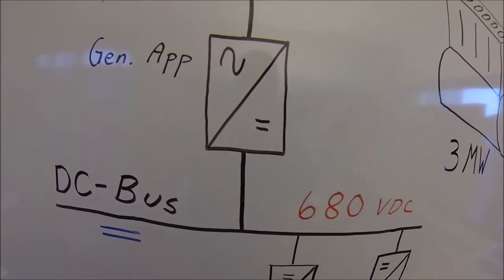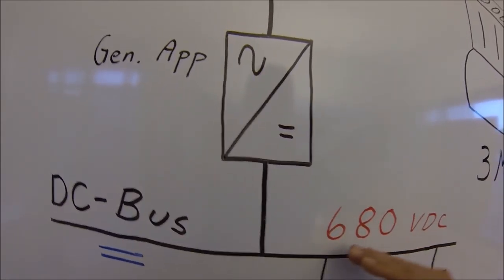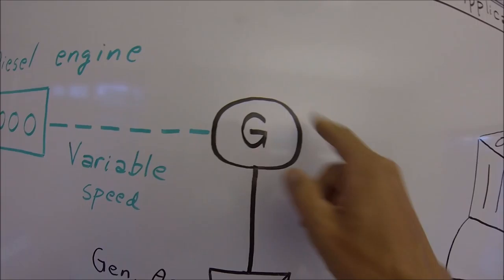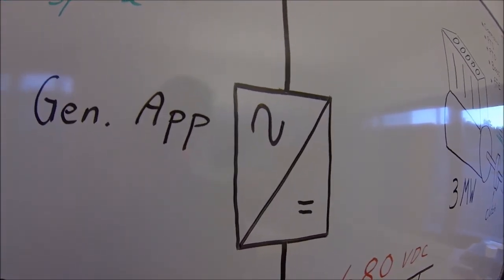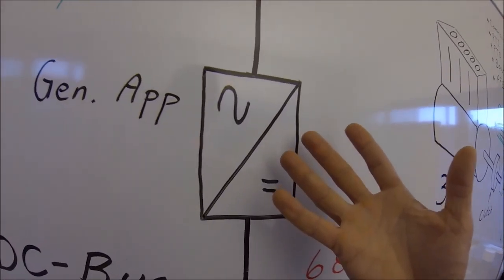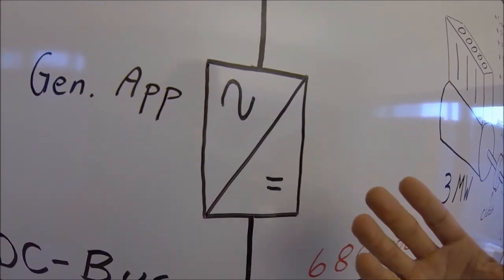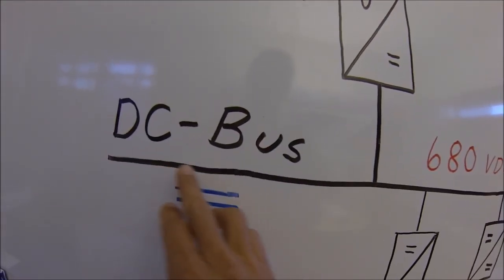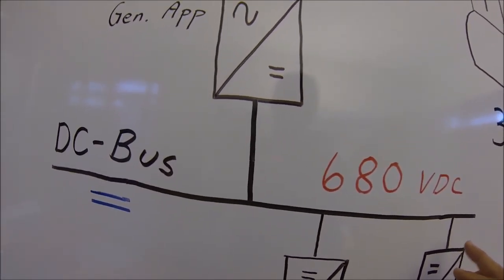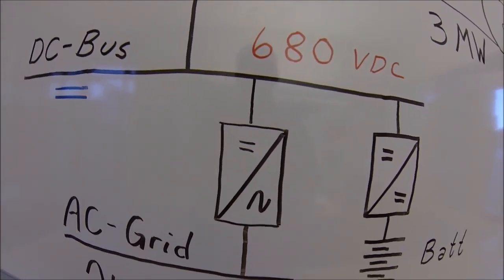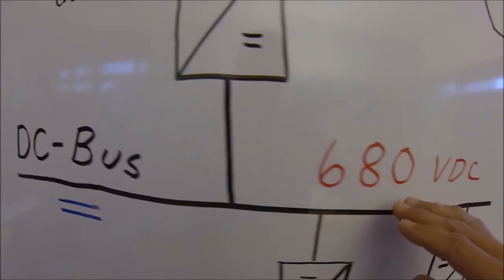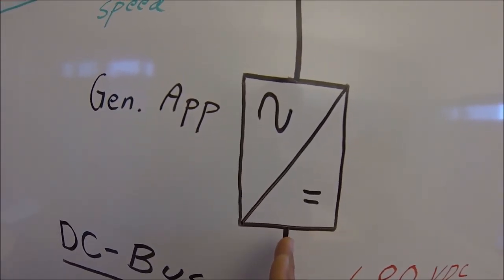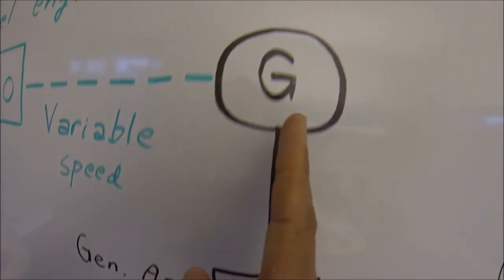The other mode is when we want to put power into the motor to drive a propeller or shaft. Then the generator application works more or less like a regular frequency converter, like the marine application. Then somebody else needs to produce the DC voltage on the bus, maybe an active frontend or grid application, or it could even be a battery. Then the energy will flow from the DC bus into the motor.